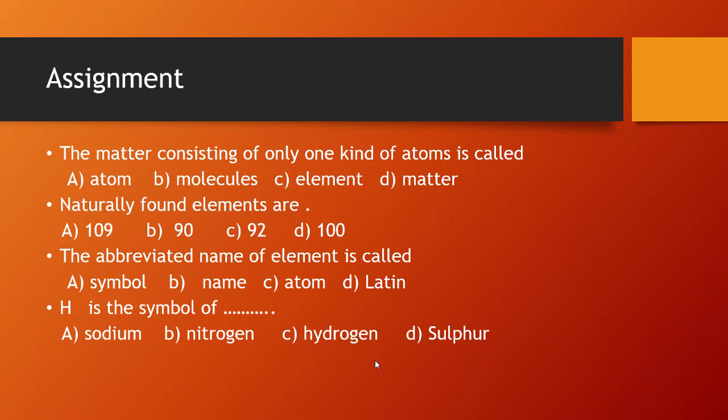There are some MCQs related to today's topic. The first one: the matter consisting of only one kind of atoms is called — Option A atom, Option B molecules, Option C element, Option D matter. The correct option is Option C, which is element. The next one: naturally found elements are — Option A 109, Option B 90, Option C 92, Option D 100. The correct answer is Option C, which is 92.